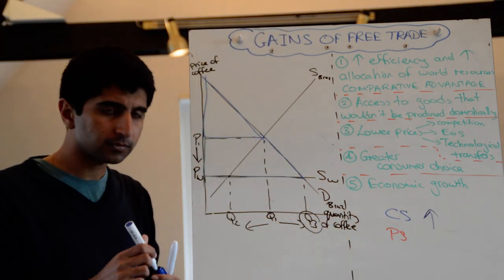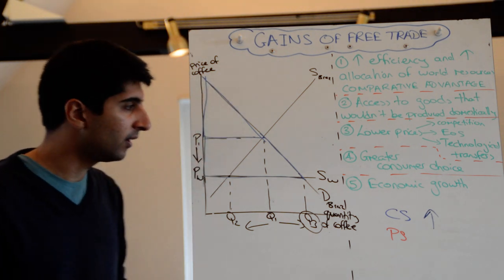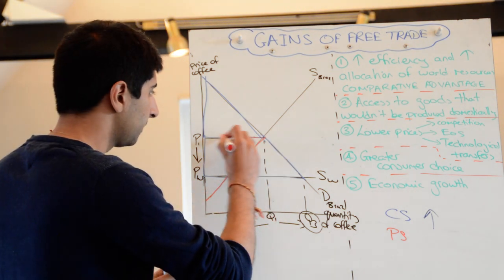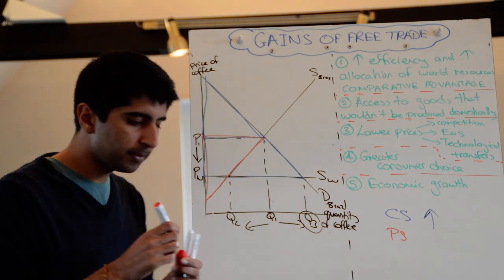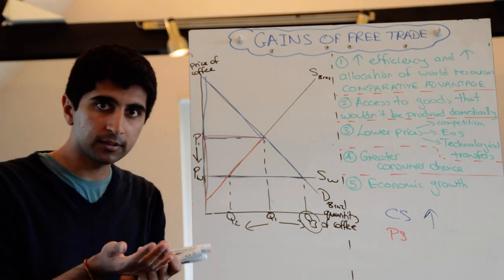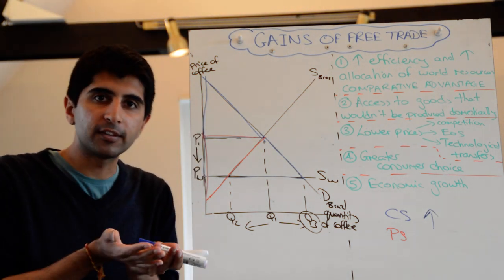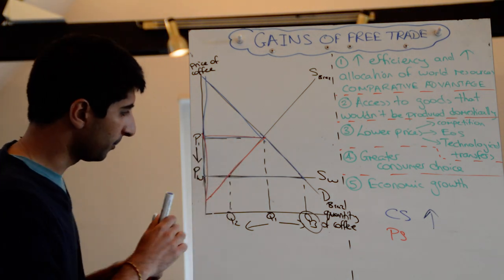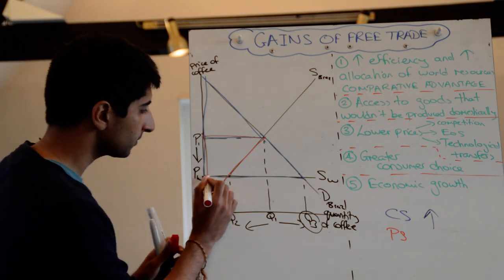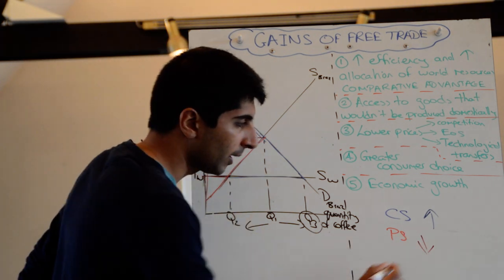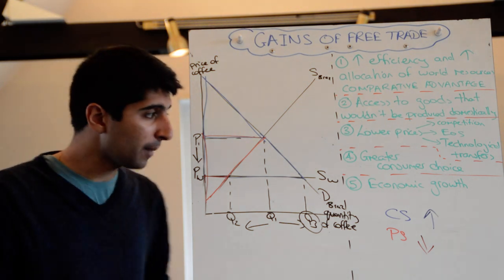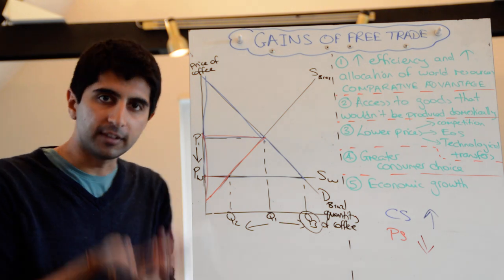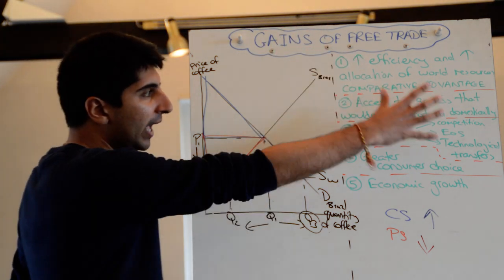What about producer surplus? Well, I can look at that in red. Producer surplus was initially this red triangle. So consumer surplus is the area below the demand curve, above the price. Producer surplus is the area above the supply curve, below the price. So from this big red triangle, what is it now? It's now this much smaller red triangle. So producer surplus for domestic producers has gone down because of the lower price. But for consumers, domestic Brazilian consumers here, surplus has increased with the lower price.